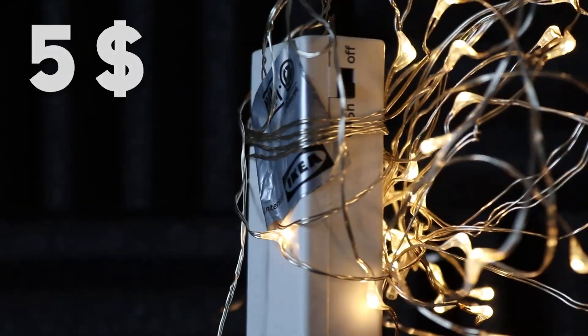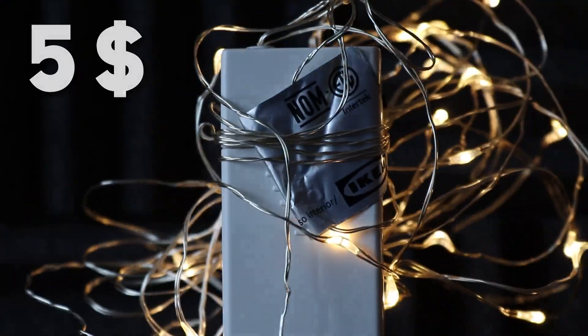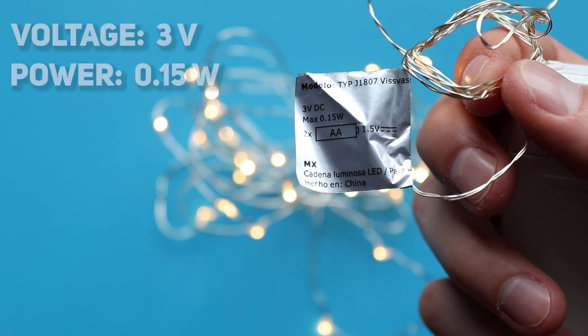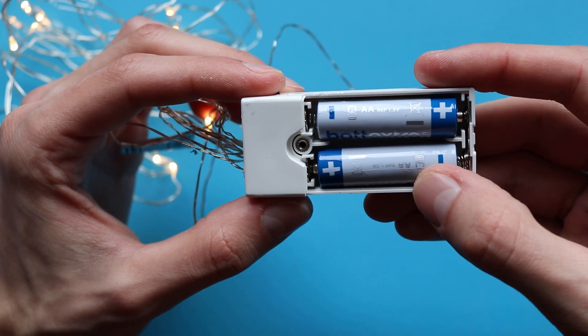This is a 5-box IKEA light. According to the label, it is powered from 3V supply and consumes 150mW of power. Let's disassemble it and look inside.